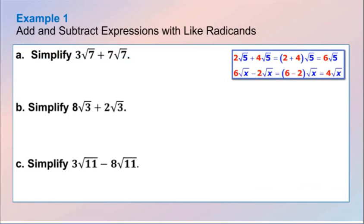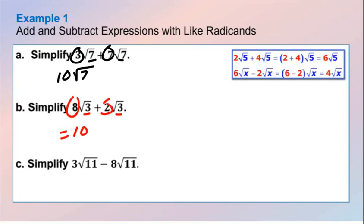Let's take a look at an example: 3 square root of 7 plus 7 square root of 7. The radicands are the same, so I know I have the square root of 7. 3 plus 7 gives us 10, so our answer is 10 square root of 7. We have like radicals already: 8 plus 2 gives us 10 square root of 3. With subtraction, the radicands are the same, so I subtract the coefficients and get negative 5 square root of 11.